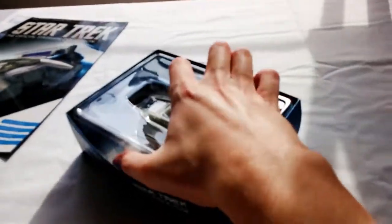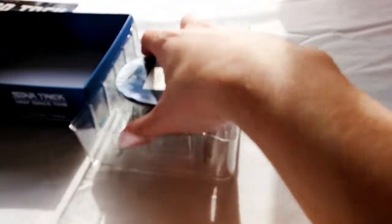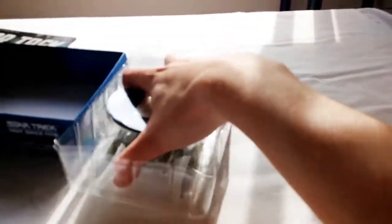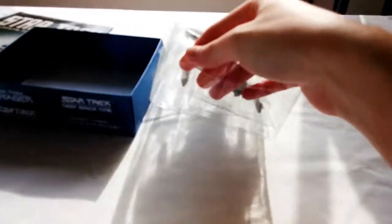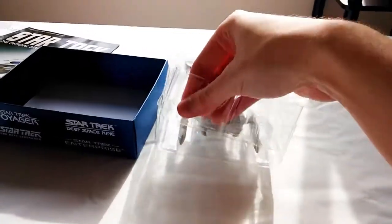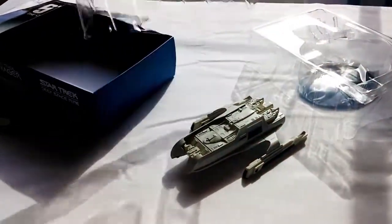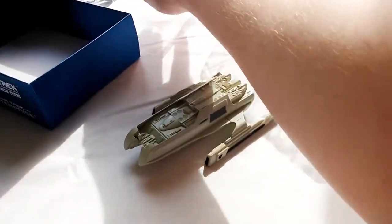So anyway, the Janolan is a Sydney-class transport ship that we see in a couple episodes. One being DS9 for only like a few seconds. And camera, camera, focus, focus. And one episode of DS9, oh, there it goes. And the other episode being Relics in The Next Generation.